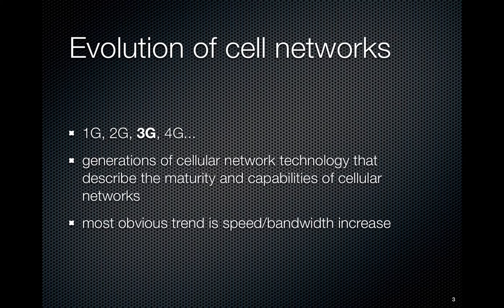We hear about 1G, 2G, 3G, and 4G — the G standing for generations of networks. They're by no means hard and fast definitions; within any generation there are different technologies and speed ranges. But the general trend as you progress through the generations is more speed and bandwidth, allowing more data to be sent, enabling more responsive applications that resemble the types of applications you'd be used to on a desktop experience.